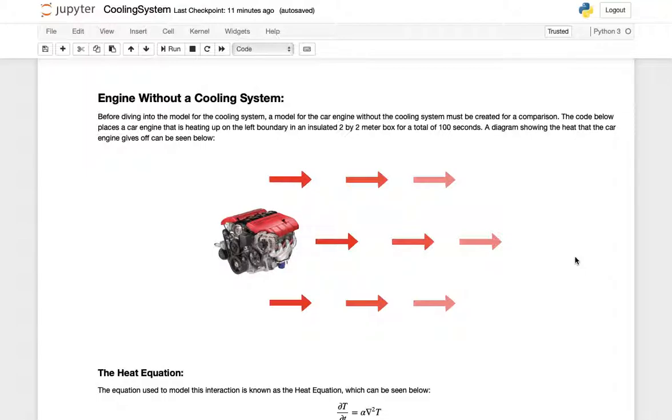In my model I have a two by two meter box and placed an engine on the left side. This engine will be running for about a hundred seconds and creating a lot of heat. We'd expect most of the heat to be right next to the engine because it's giving off that heat. As it goes farther on it will become weaker and weaker. That's represented by the change in color where it's a lighter and lighter color.